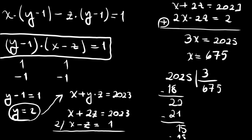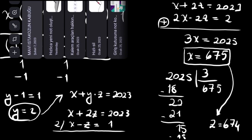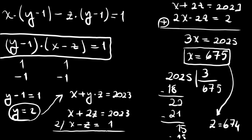From x equals 675 and x minus z equals 1, we get z equals 674. So our first solution is x equals 675, y equals 2, z equals 674.